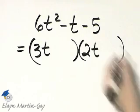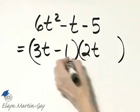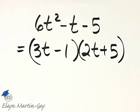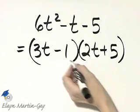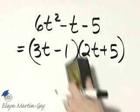What about factors of negative 5? Let's try negative 1 and positive 5, and let's see what happens. Product of the outside terms, that's 15, and that's negative 2, so that will not work out.